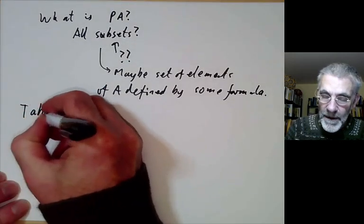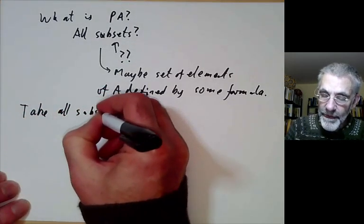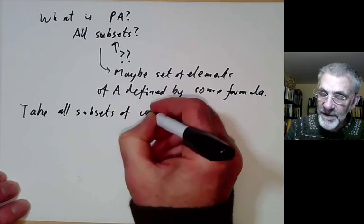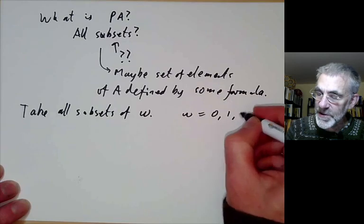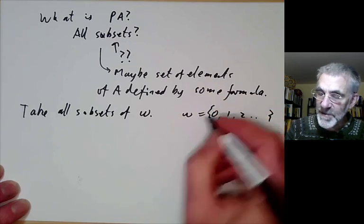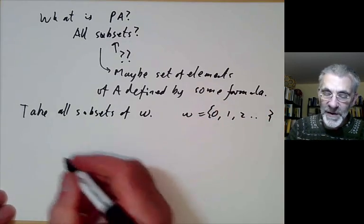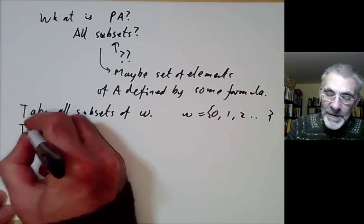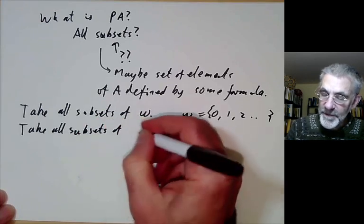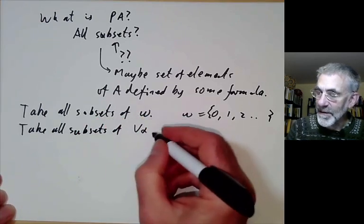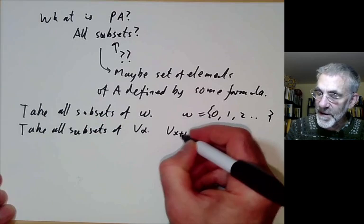But there really is a bit of a problem here because consider the following question. Let's take all subsets of some infinite set say omega so let's take omega to be zero one two just to be really explicit and we form the power set of omega. Well if we can do that why not take all subsets of V alpha. Well that's easy enough that gives you V alpha plus one.